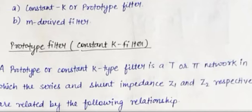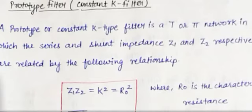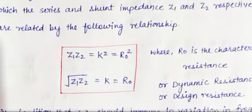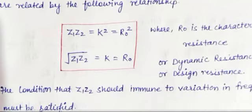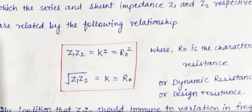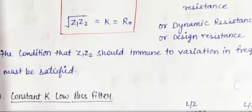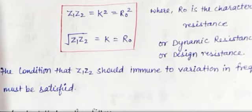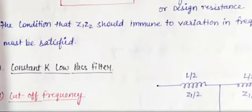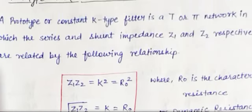Depending upon the relationship, there are two types: the prototype filter and the M-derived filter. The prototype filter, or constant K filter, is a T or Pi network in which the series and shunt impedances Z1 and Z2 are related by: Z1 × Z2 = K² = R0². You have to remember this relation, or Z1/Z2 = K. The condition that Z1 and Z2 must satisfy with variation in frequency should be followed. If it is followed, then it is a prototype filter.